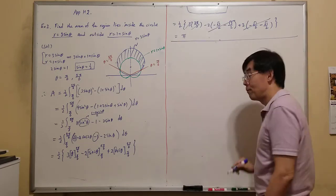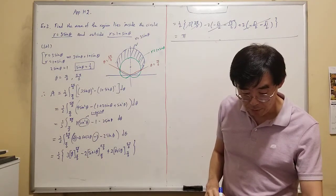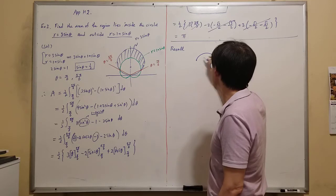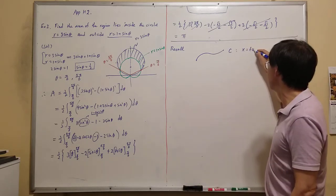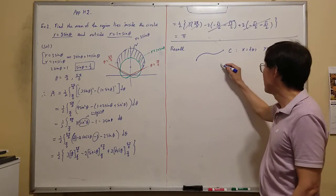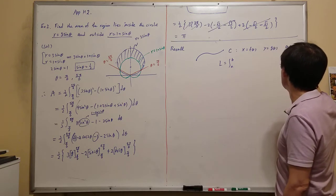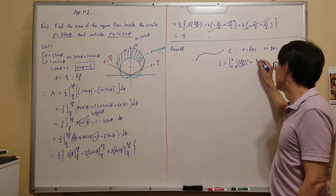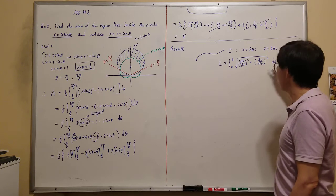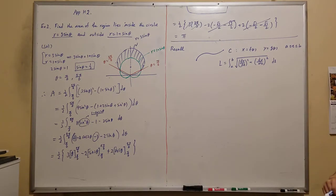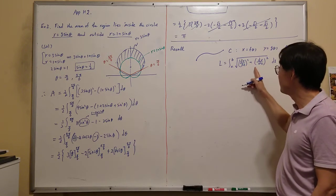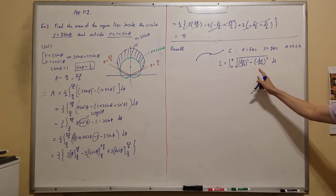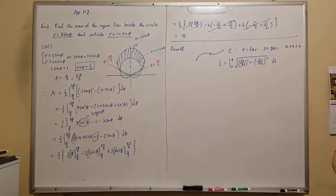That covers area in polar coordinates. Now for arc length. Recall that for a parametric curve x = f(t), y = g(t), the arc length L from a to b is: L = ∫_a^b √[(dx/dt)² + (dy/dt)²] dt. This is the speed function — integrating speed over time gives total distance along the curve.